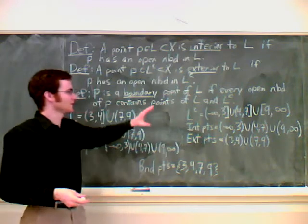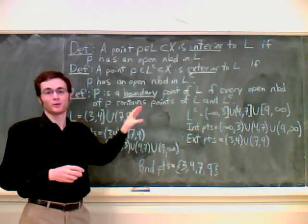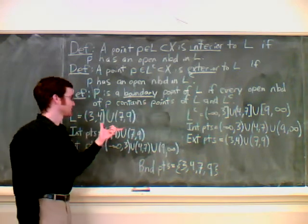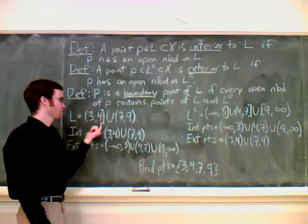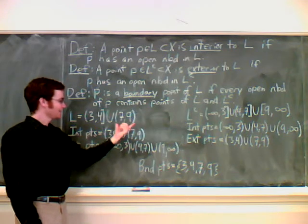We can look at the interior, exterior, and boundary points of a set as a whole. For instance, let's take L as the example we did last time, which was (3,4] union with (7,9).